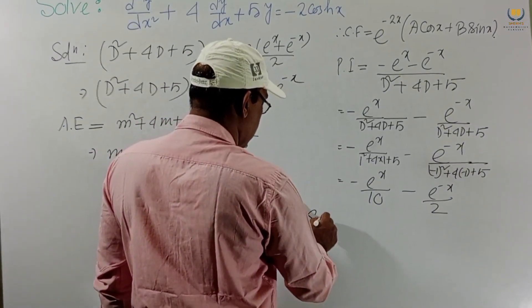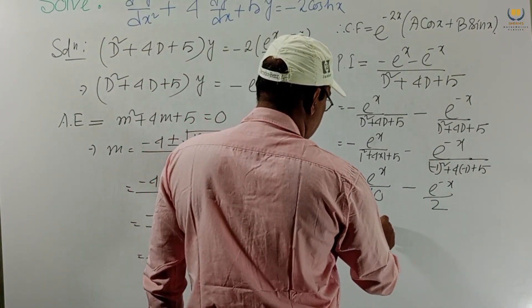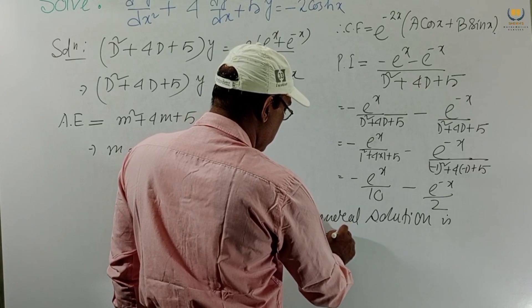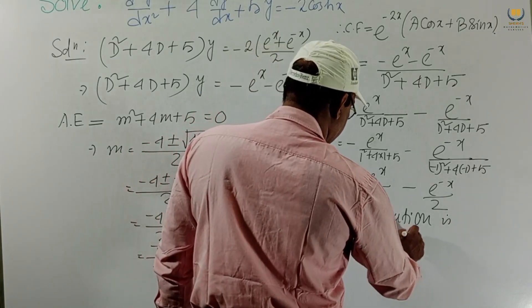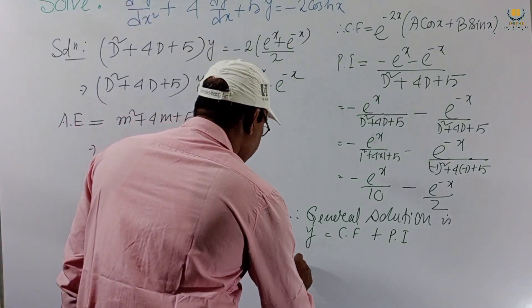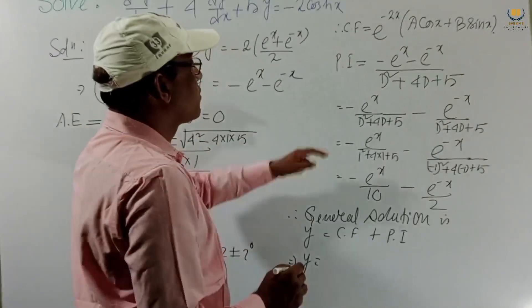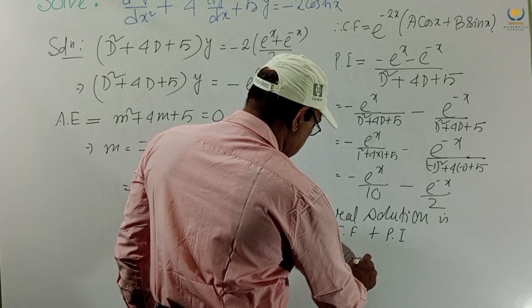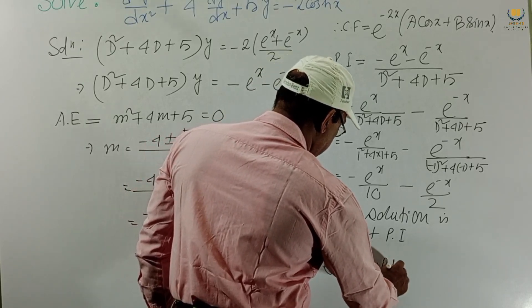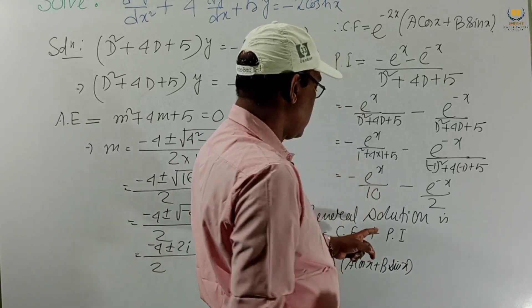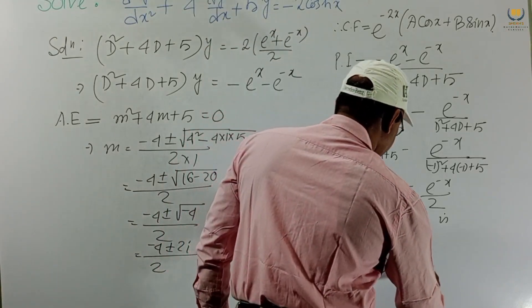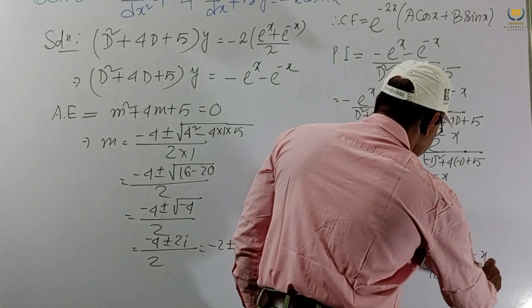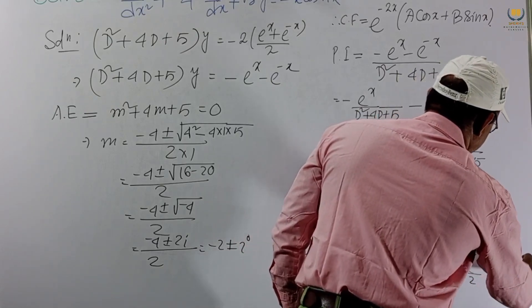The general solution is y = CF + PI. Therefore y = e^(-2x)(A cos x + B sin x) - e^x/10 - e^(-x)/2. This is the final answer for Problem 2.